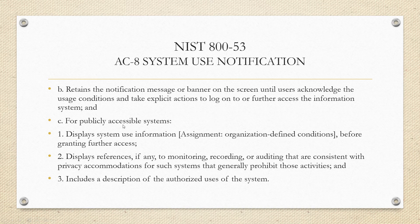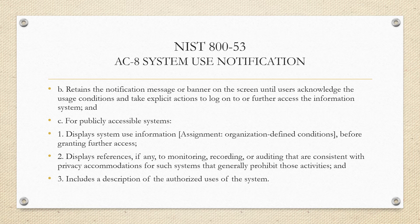For publicly accessible systems, the guidelines are very similar: display system use information before granting access — notifications right in your face before you log in. It displays references to monitoring that are consistent with privacy accommodations for that given system, such as websites or regulations users can refer to. Then there's a description of the system — if it's publicly accessible, like a library or a government system accessible to civilians, it states what you're allowed to do and what's expected of you within that system.